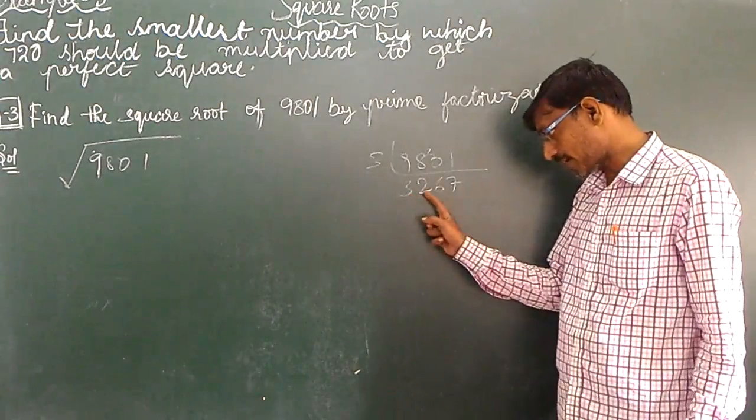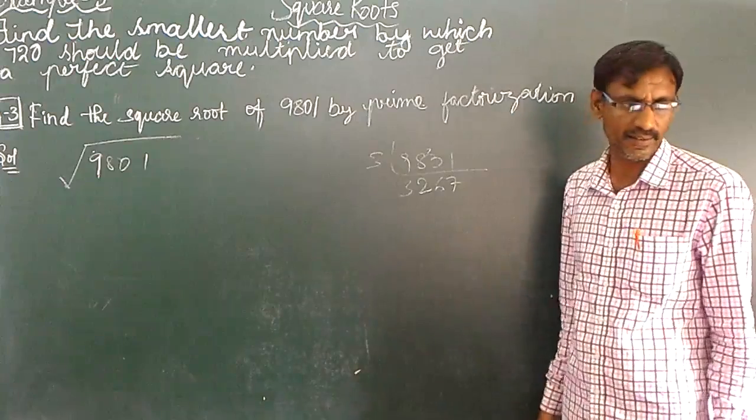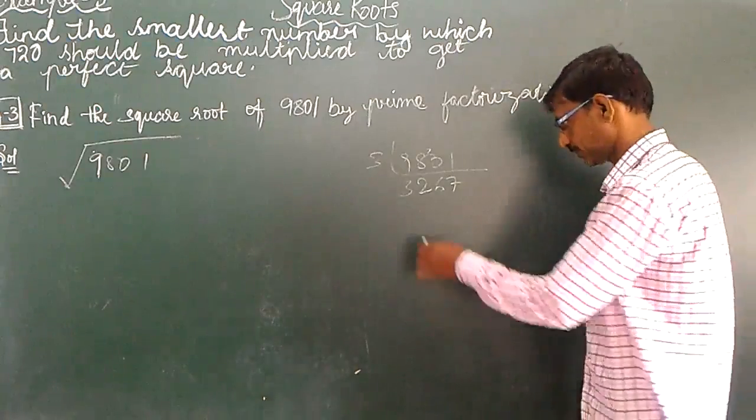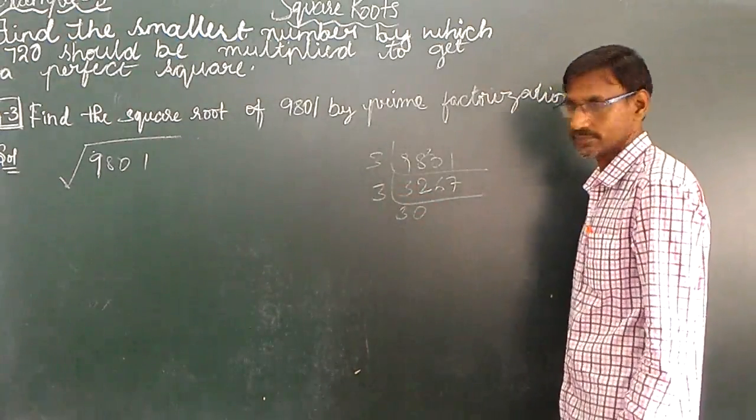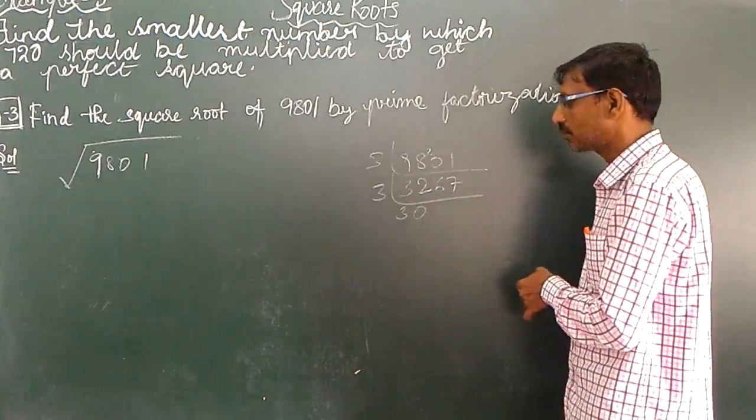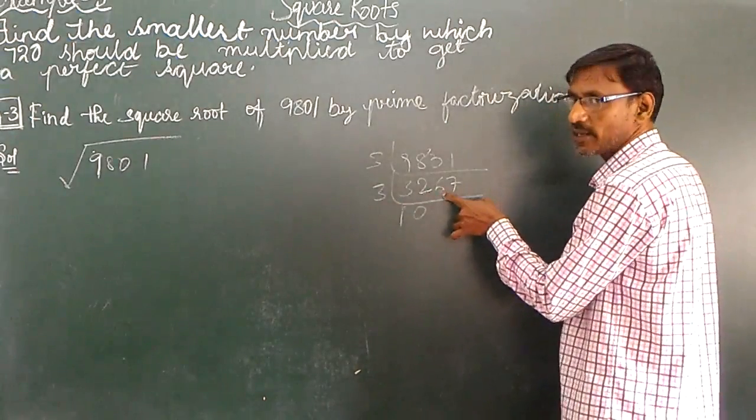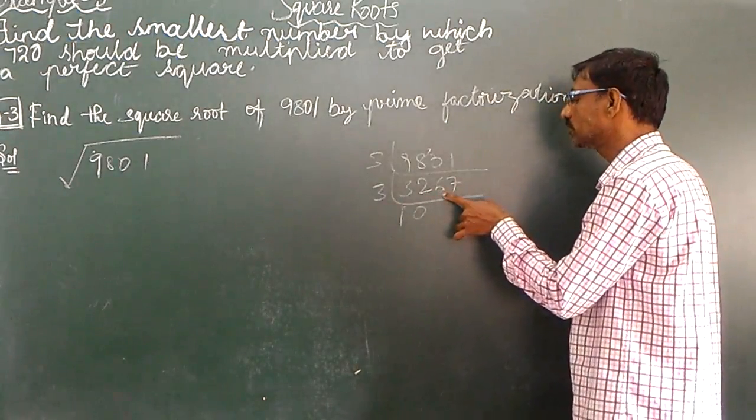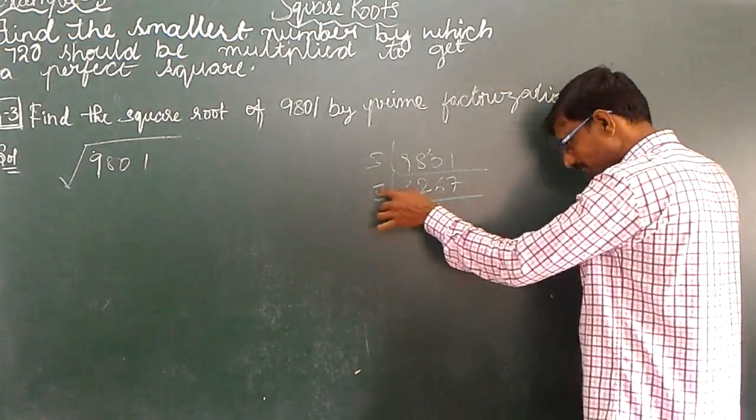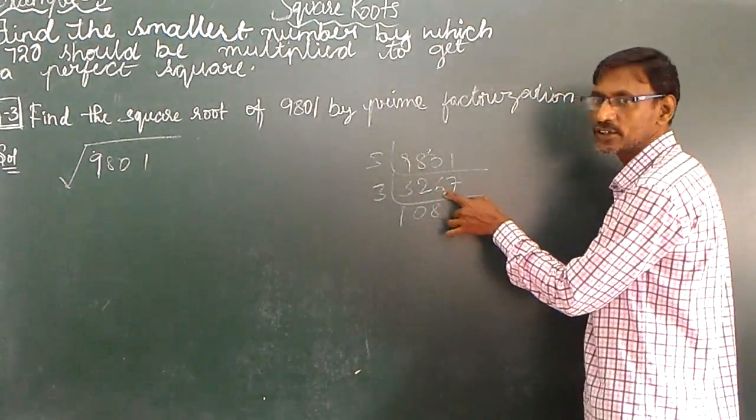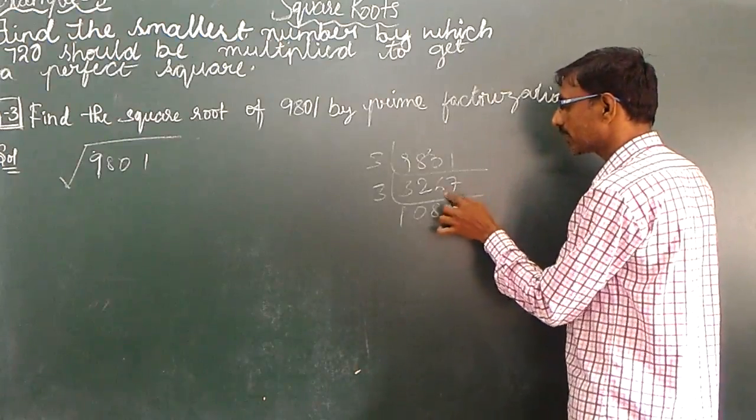5 plus 6? 11 plus 7, 18. Again it is divisible by 3. 3 30s are 20. 3 10 jar 30. 2 remainder. 2, 8 jar. 3 8 jar 24, remainder 2.